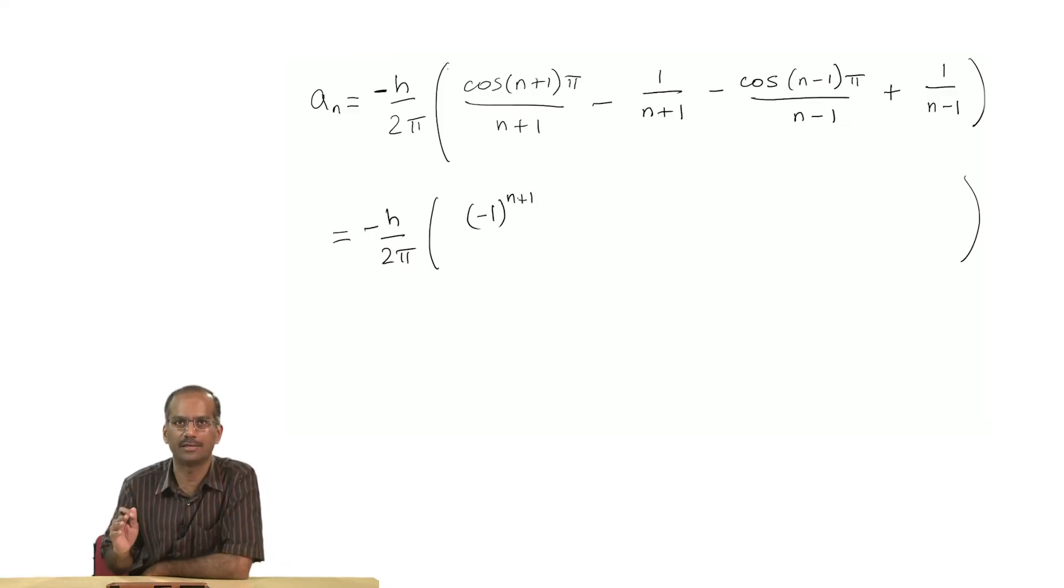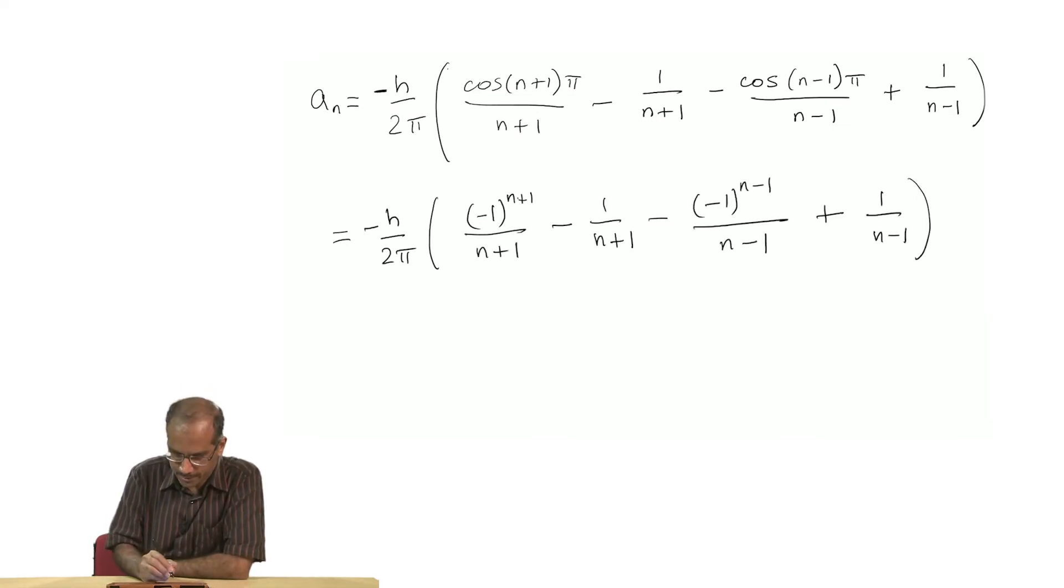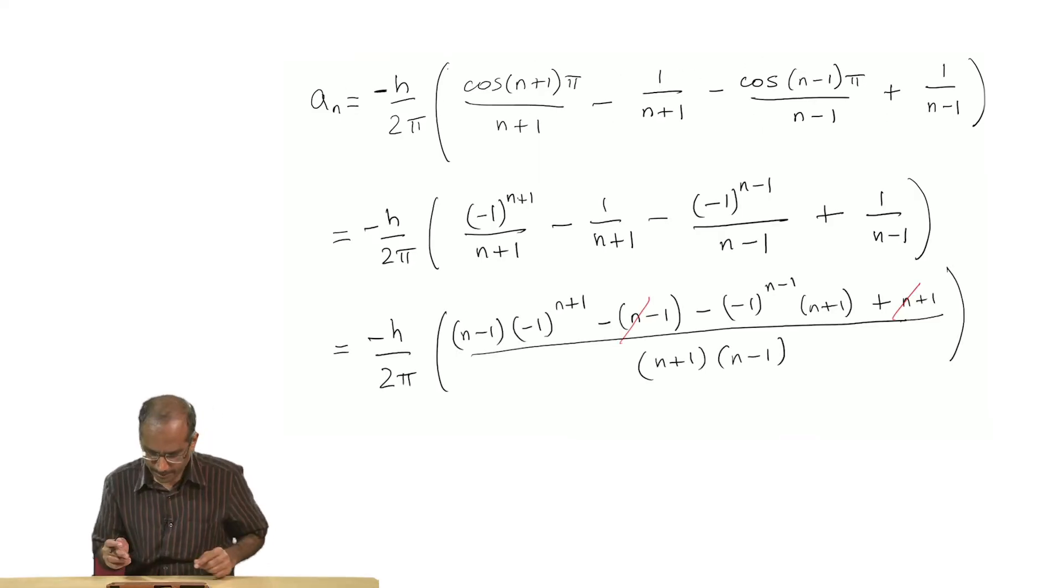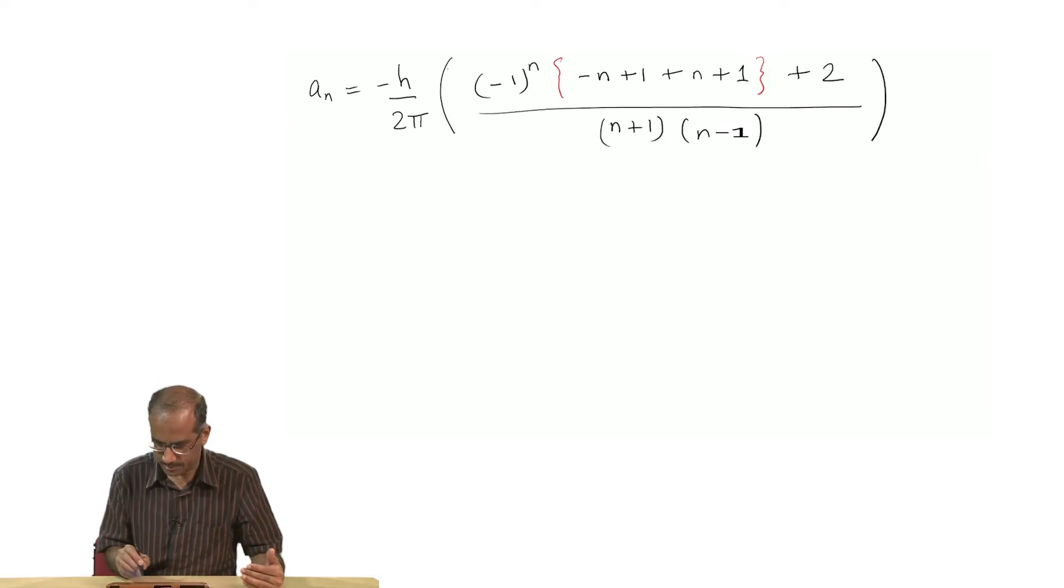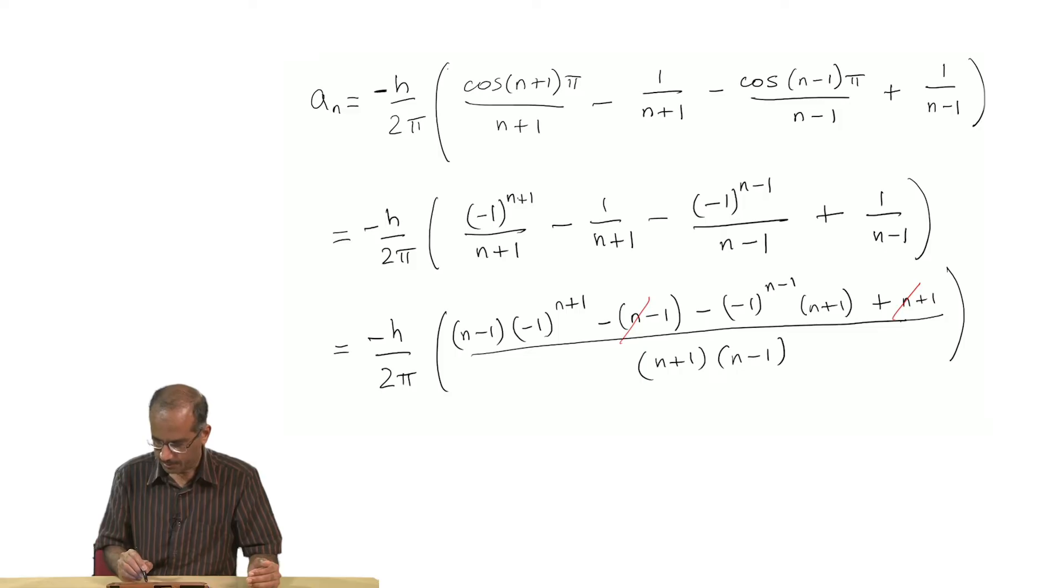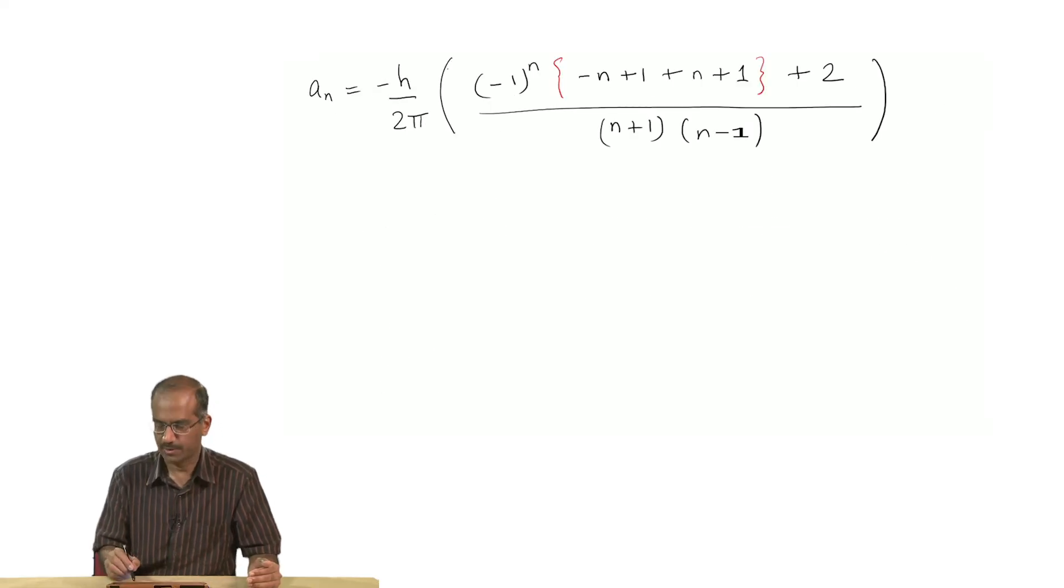Remember that n is an integer which is why we are able to do this. Now we are ready to take the LCM. What I have done is I have taken -(-1)^n outside, in which case you can put together 4 of those terms like this, and this plus 1 and plus 1 together will give you this +2 term here.